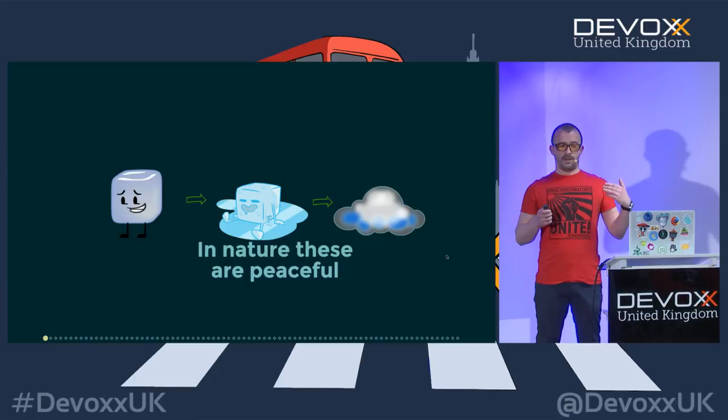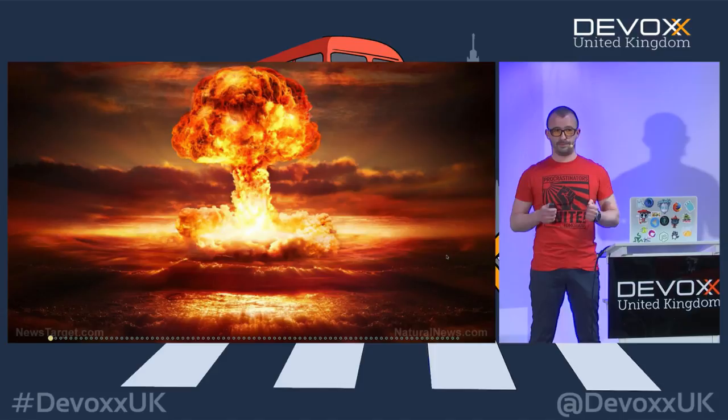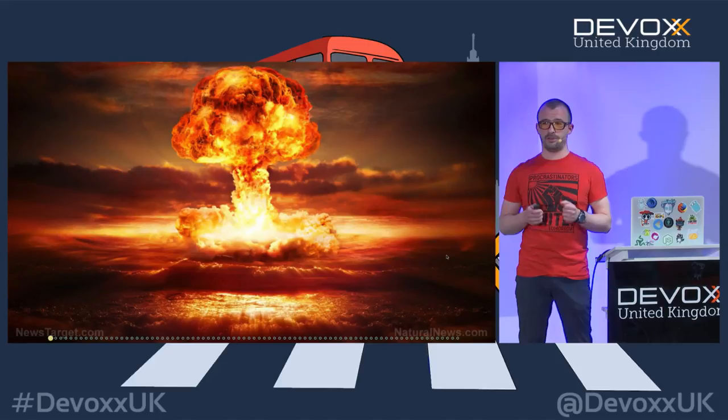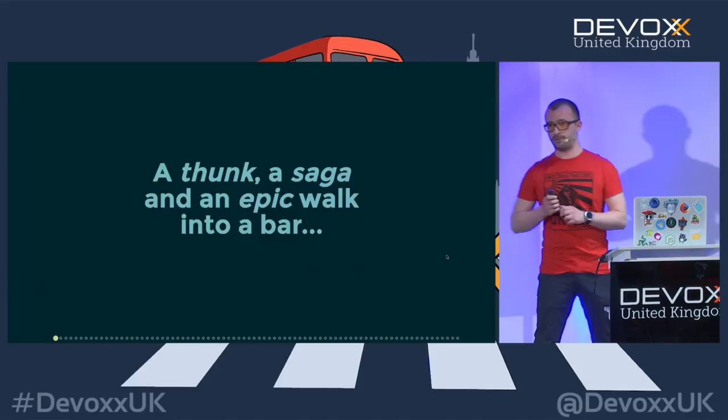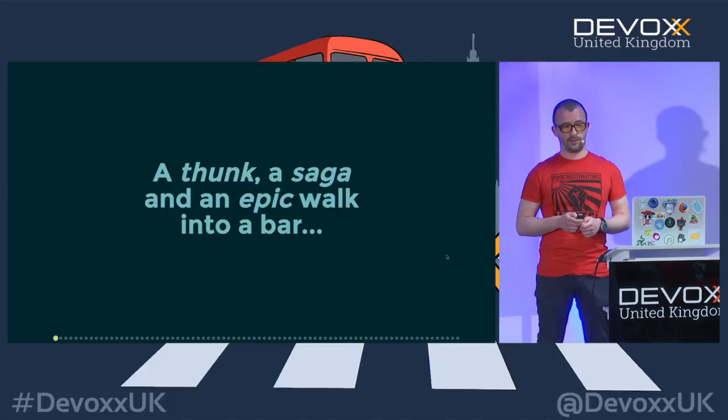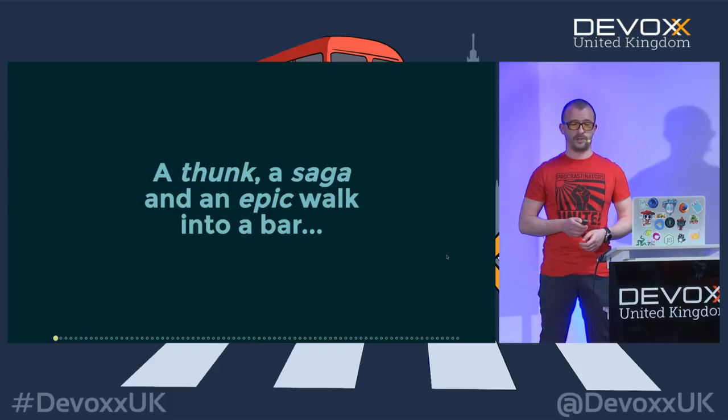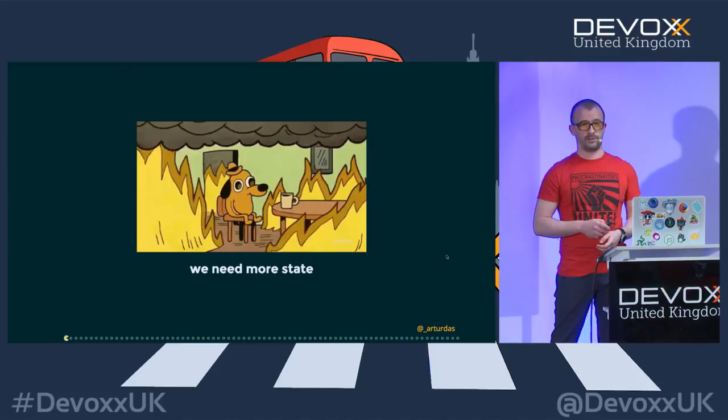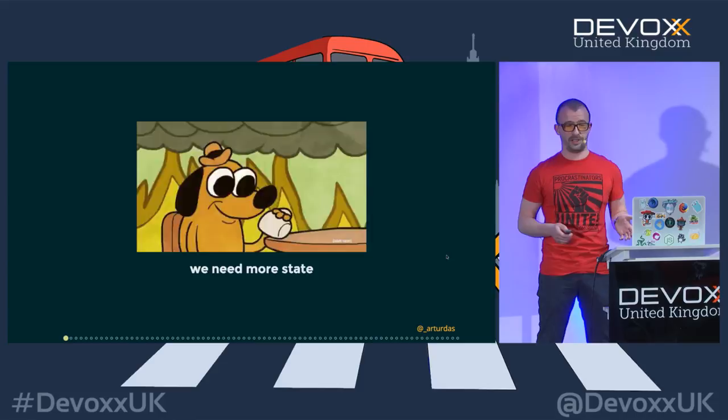However, as a developer, I'm also really bad at applying these analogies in practice. Hopefully none of you are writing nuclear reactor code in JavaScript. But we should not take ourselves too seriously, and that's why I figured I'd start my talk with a joke. A thunk, a saga, and an epic walk into a bar. The bartender asks, 'What's the state of affairs?' This is funny because it's true — the way we solve problems when we have too much state, we just add more state to it.